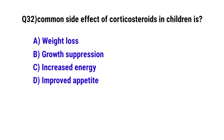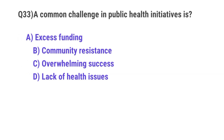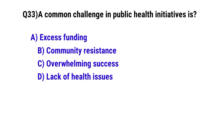Question 32: A common side effect of corticosteroids in children is — the correct option is B: Growth suppression. Question 33: A common challenge in public health institutions is — the correct option is B: Community resistance.